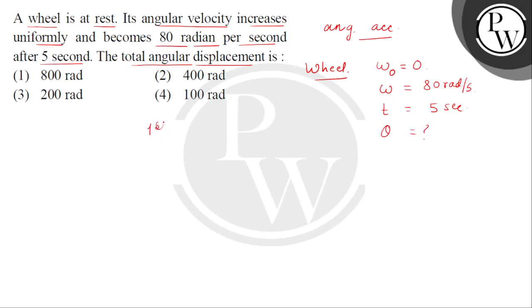First of all, we'll find alpha from the first kinematical equation of rotational dynamics. The first equation is omega equals omega naught plus alpha T. Substituting the values, we get 80 minus 0 divided by 5. So the value of alpha comes out.